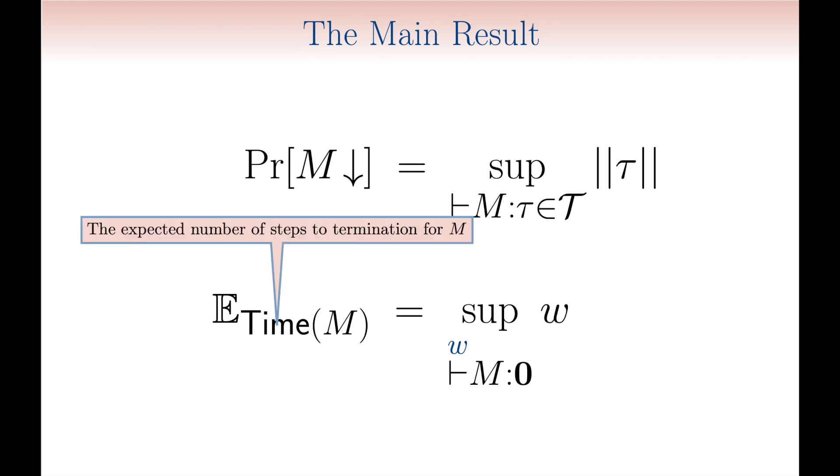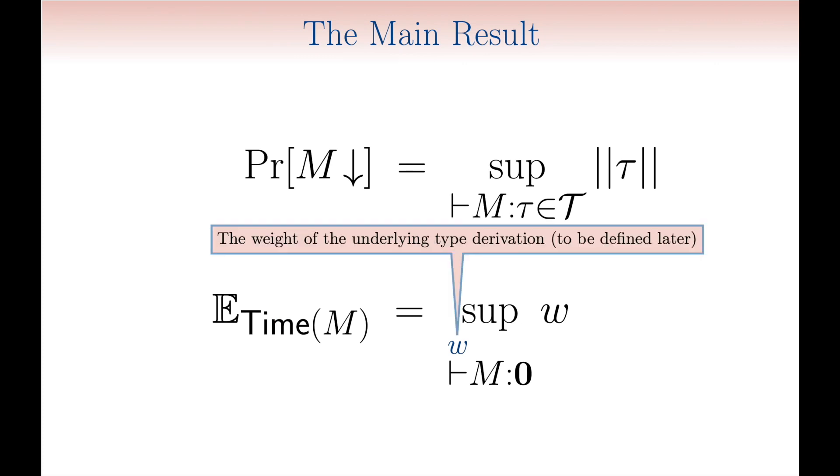Indeed, the expected number of steps to normal form equals the least upper bound of the weights one can attribute to terms in our type system.